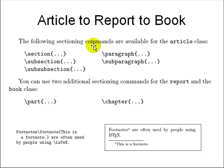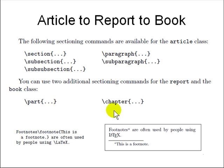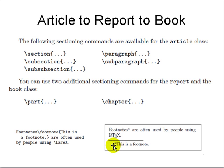In an article you have section, subsection, subsubsection, and paragraphs. In a report, you additionally have part and chapter. Inside a chapter, you put a title and then the chapter notes. On a page, you can put a footnote inside the text with backslash footnote followed by some text, and it becomes a footnote automatically — numbered automatically by LaTeX and appearing on the correct page.